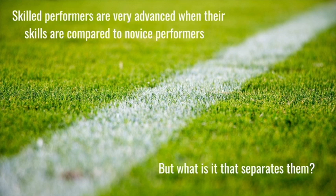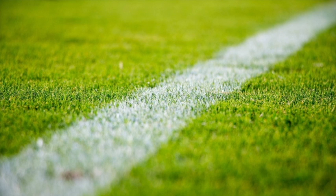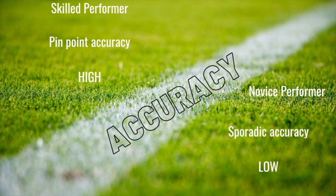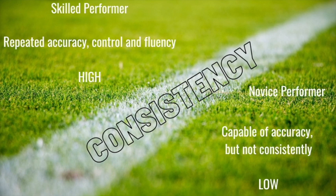The first point is accuracy. A skilled performer has pinpoint, very high accuracy, whereas a novice performer is capable of producing similar accuracy but very sporadically. Consistency is very high within a skilled performer — what we mean by consistency is repeated accuracy, repeated control, repeated fluency — hitting that high level time after time. Whereas a novice performer is capable of doing it, but very randomly, with low consistency.